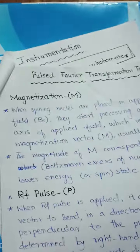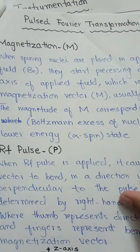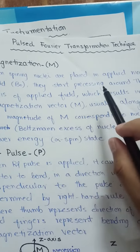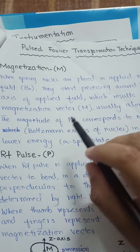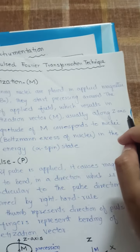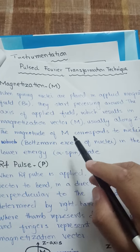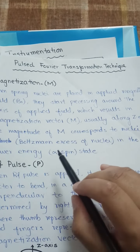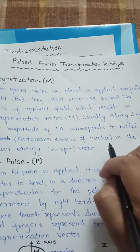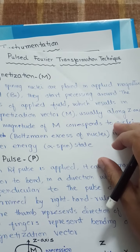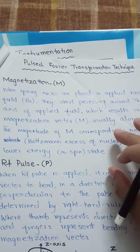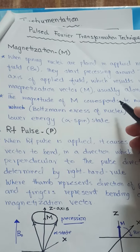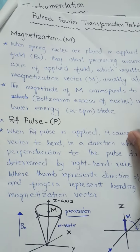Now we will discuss magnetization. When spinning nuclei are placed in an applied magnetic field, they start precessing around the axis of the applied magnetic field, which results in a magnetization vector usually along the z-axis. The magnitude of this vector M corresponds to the nuclei in the lower energy, or alpha, spin state, which arrange themselves along the axis of the external magnetic field and start precessing around it.